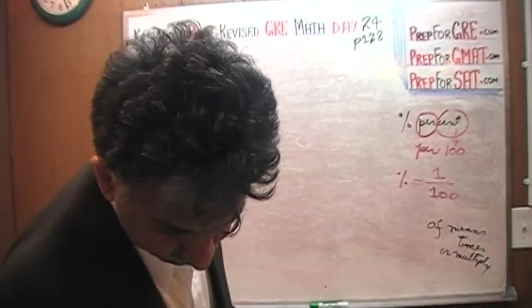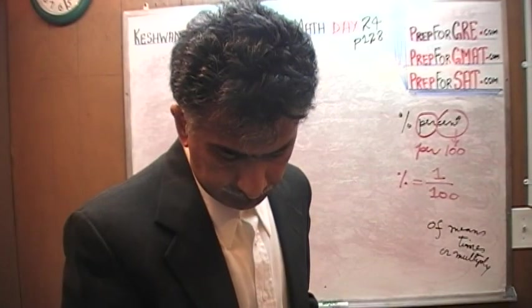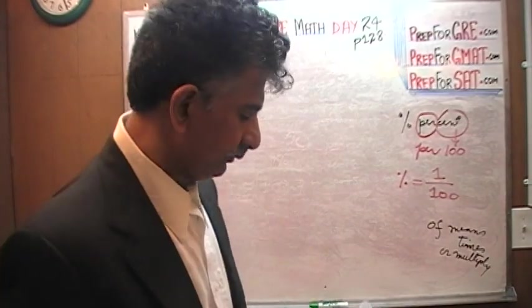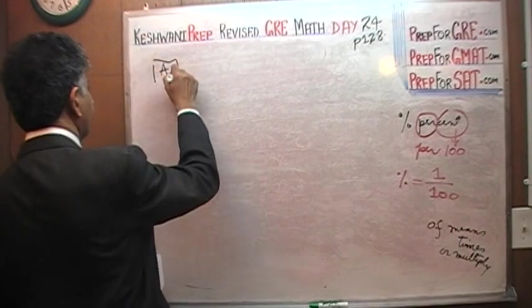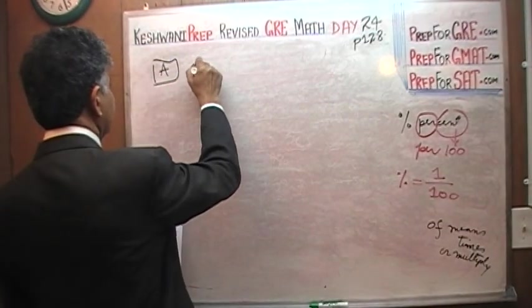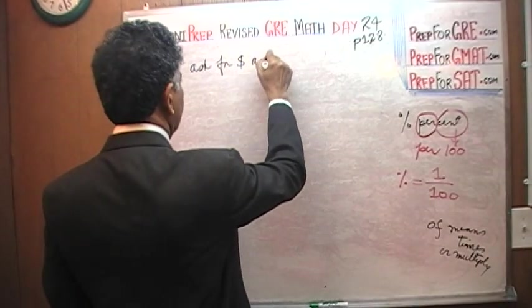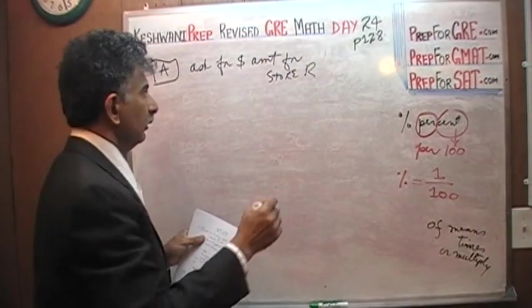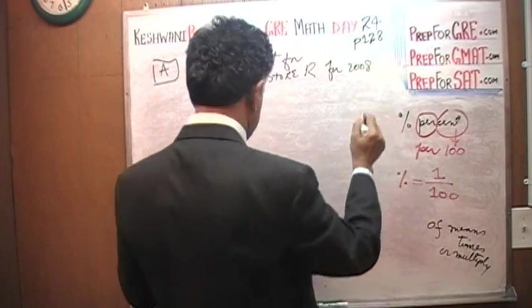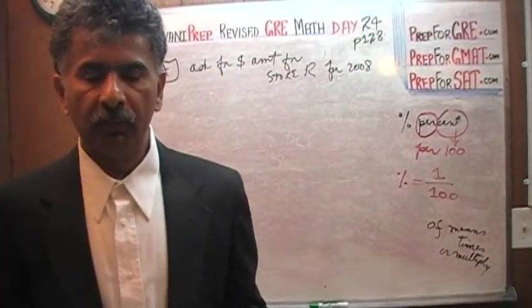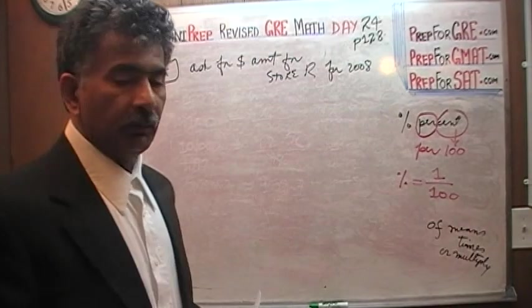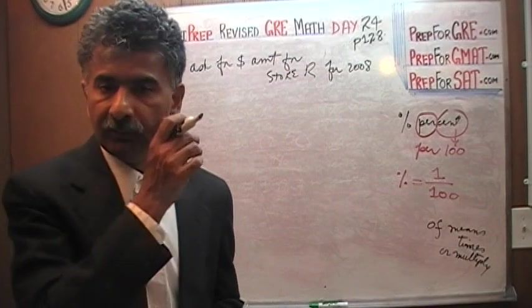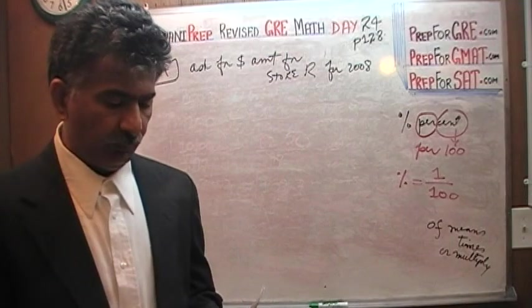The first statement says, for 2008, the dollar amount of sales at store R was greater than each of the other four stores. It asks us for dollar amount of sales. It asks us for dollar amount for store R for 2008. And we are asked whether or not this dollar amount of sales in 2008 was more than the sales at all the other stores. Well, if you look at the chart on the previous page, what you will find is that we are not given any dollar amount.